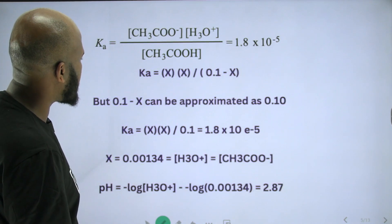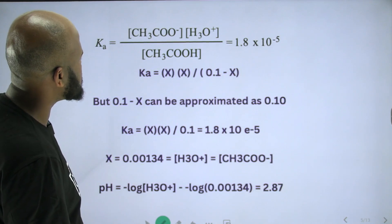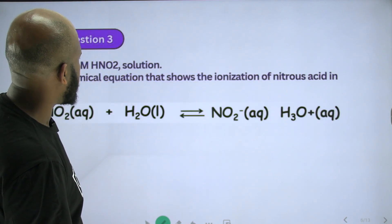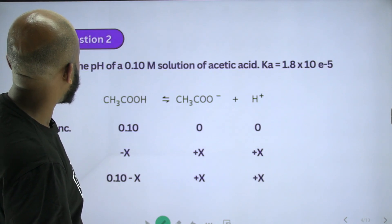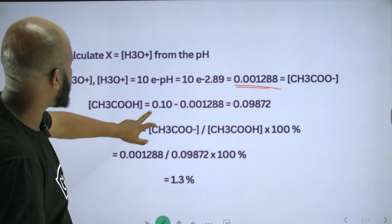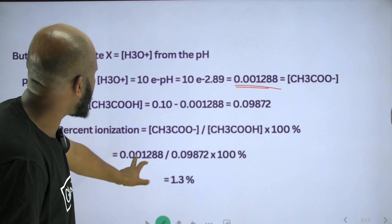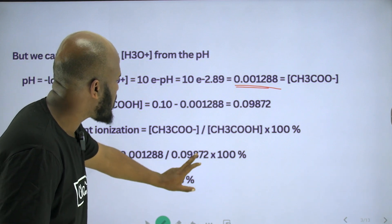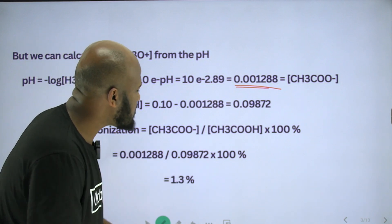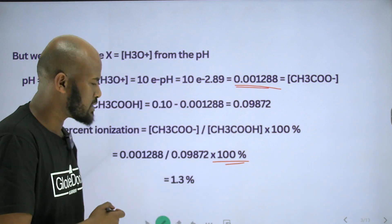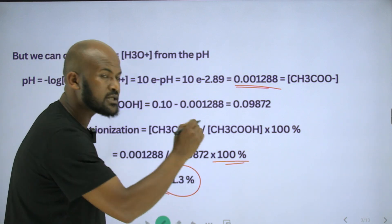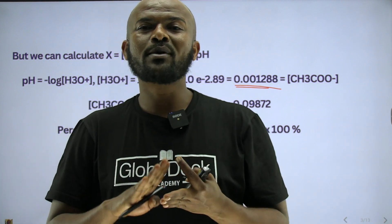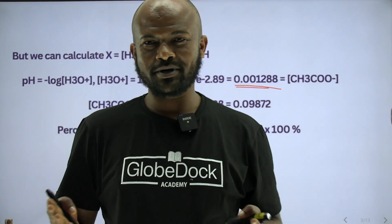The hydronium ion concentration from pH: pH equals negative logarithm of hydronium ion concentration, so hydronium ion concentration equals 10 to the minus 2.89, which is 0.00128 molar. So the percent ionization equals 0.00128 divided by 0.1 minus 0.00128, times 100%, which gives approximately 1.3%.